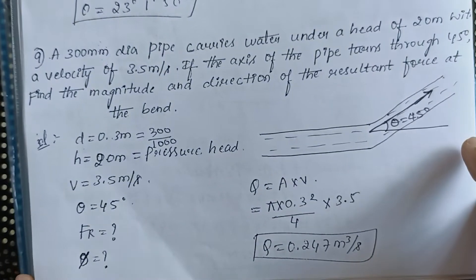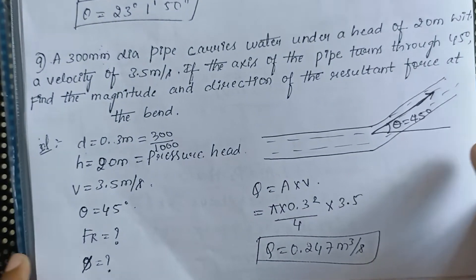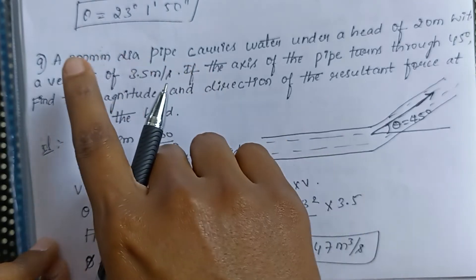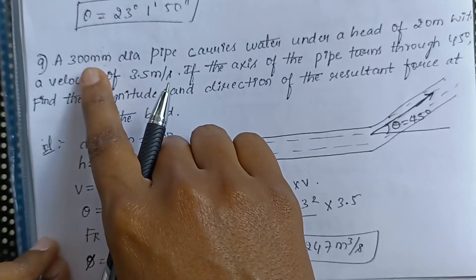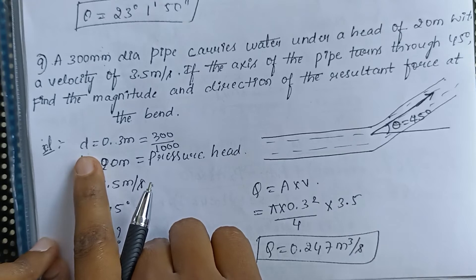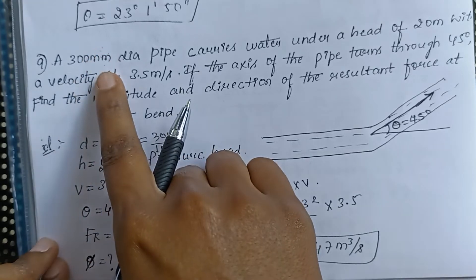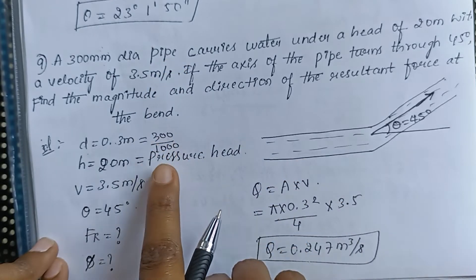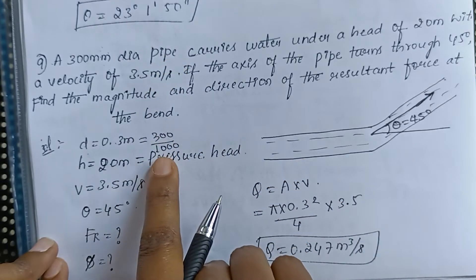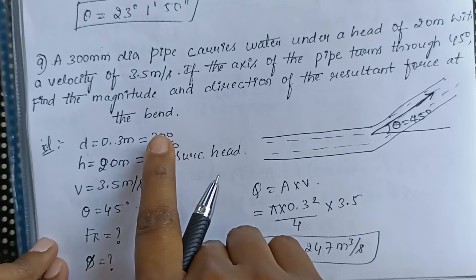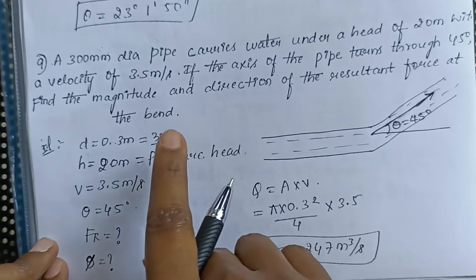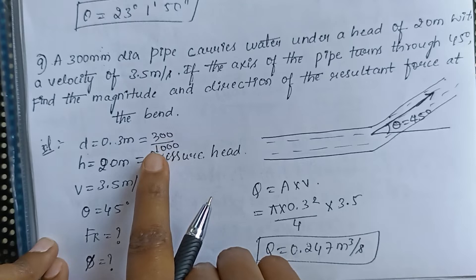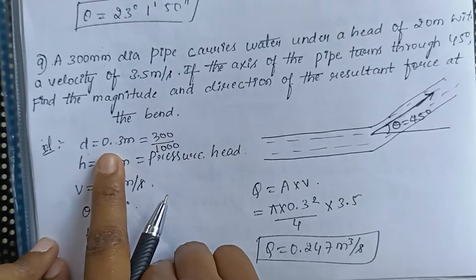Let us start writing the data given in the question. The constant diameter of the pipe is 300 mm. Let us take d as the diameter, which is 300 mm, and convert it to meters by dividing by 1000, since 1000 mm makes 1 meter. Dividing 300 by 1000 gives us 0.3 meters.